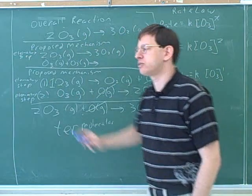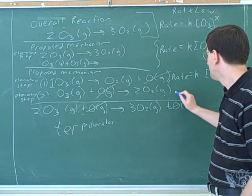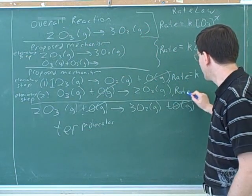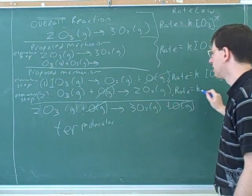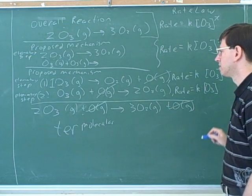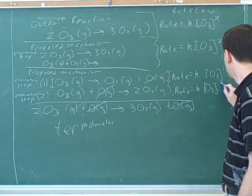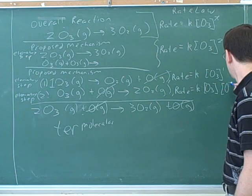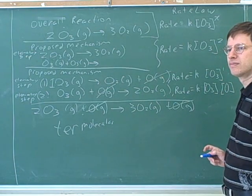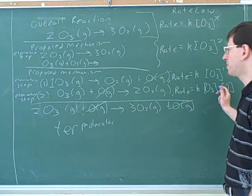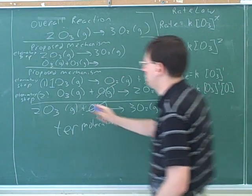So we don't need to write it down. Or we could write it down to emphasize that it has an exponent of 1. Is it legal to get this exponent from this coefficient? Yes, because this is a proposed elementary step. Here we had a unimolecular elementary step, so an exponent of 1. What would be the rate law or the rate expression for this second step? What would be the rate of concentration of O3 times the concentration of O?